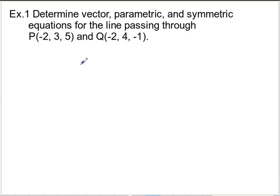So for our first exercise, determine vector, parametric, and symmetric equations for the line passing through these two points. And in this case, I actually think it makes a lot of sense to do this in the order in which it's provided. So let's start off with a vector equation. And the basic form of the vector equation, which hasn't changed from R2, is going to look like that.